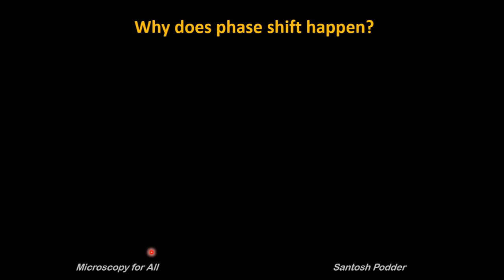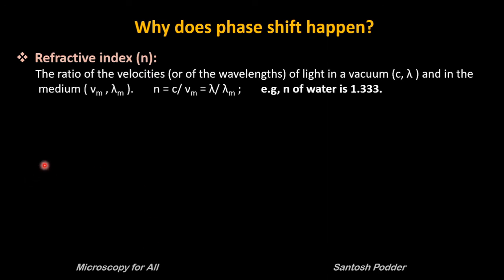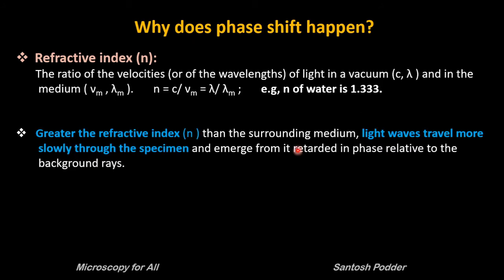Now why does phase shift happen? To understand this we need to know the refractive index. The refractive index is the ratio of the velocities or the wavelength of light in a vacuum versus in a medium, given by a corresponding formula. For example, the refractive index of water is 1.3, meaning light travels 1.3 times as fast in vacuum as in water. So when the refractive index is greater than the surrounding media, light waves travel more slowly through the specimen and emerge retarded in phase relative to the background rays.